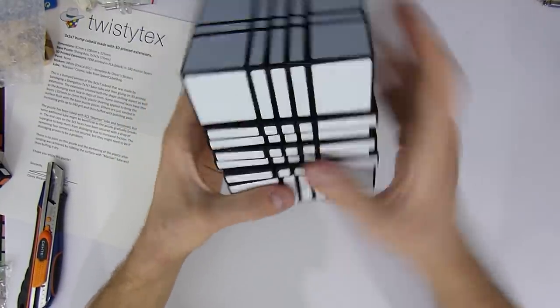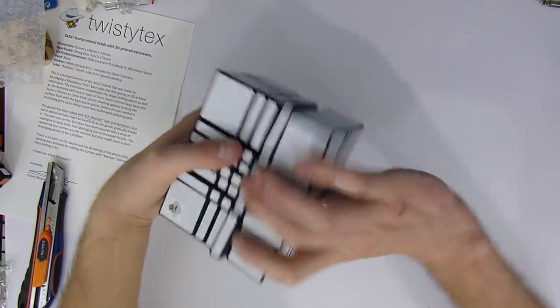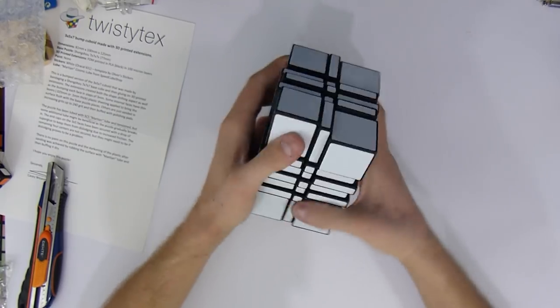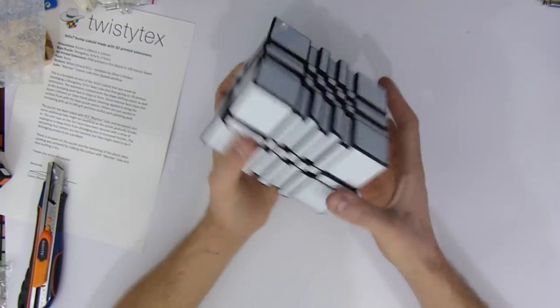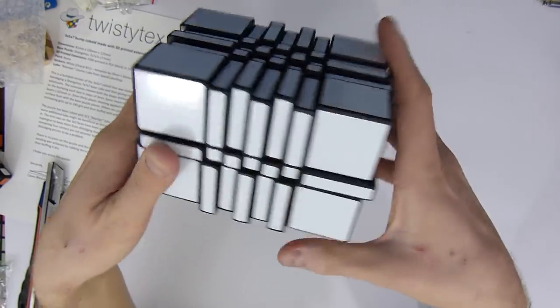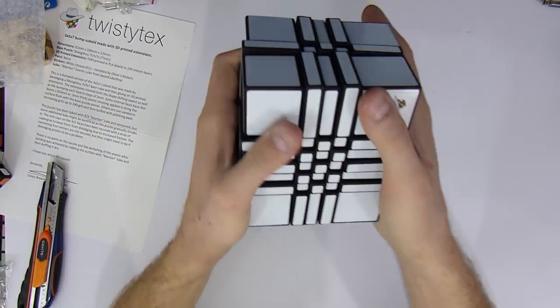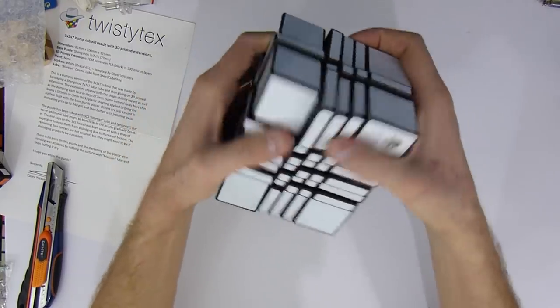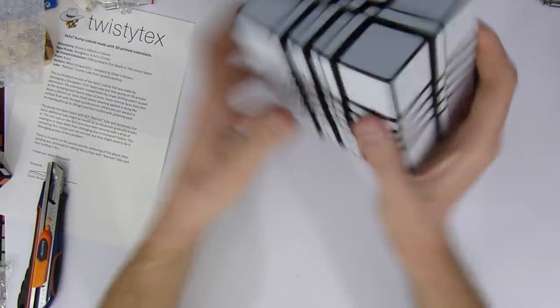Let's do a checkerboard pattern. Because this is, after all, an N by N by N with N being an odd number. So, it's obviously possible to make a checkerboard. So, this is what the checkerboard pattern looks like. This is quite impressive. Not only is this a 3x5x7, but it's, you know, an even more shape-shifting 3x5x7. So, that's great.